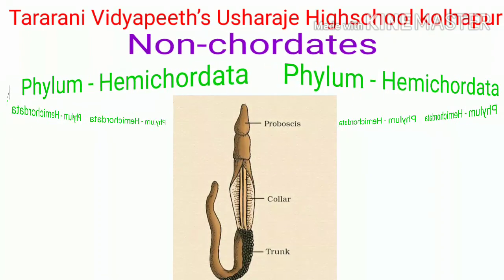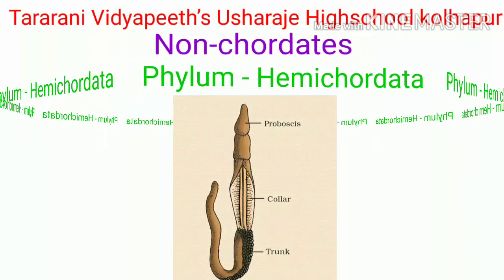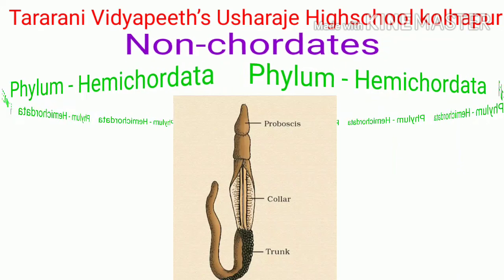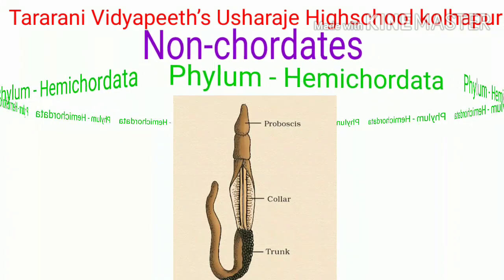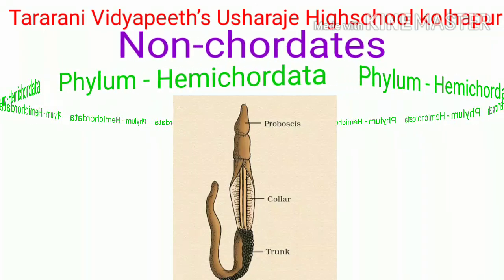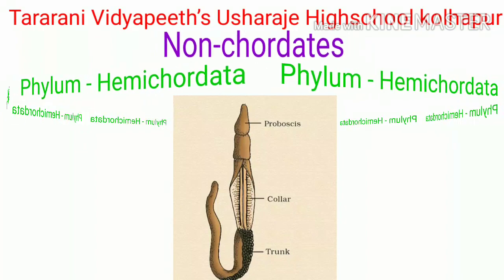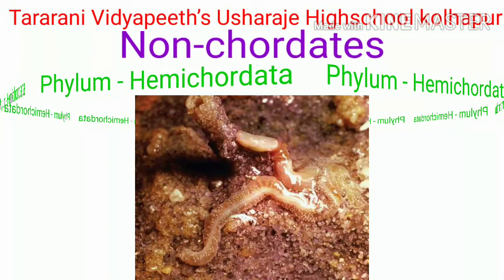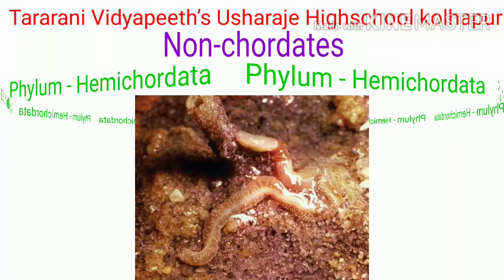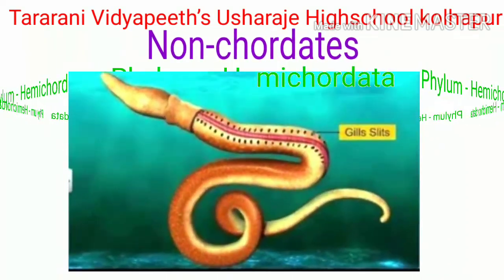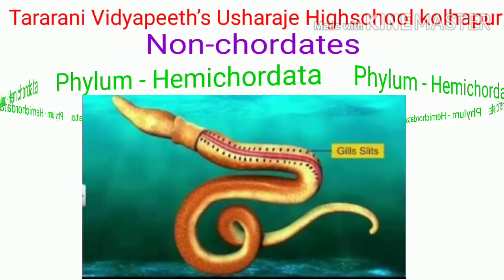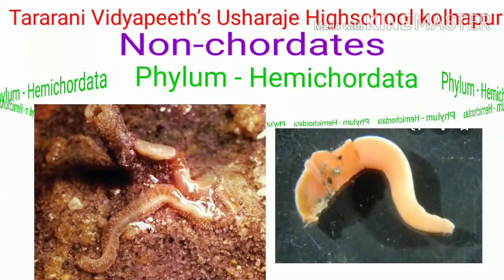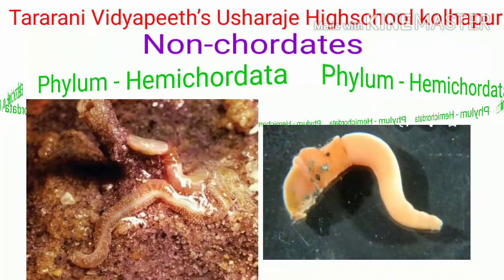Phylum Hemichordata: the body is divided into three parts — proboscis, collar, and trunk. Notochord is present in the proboscis region only, hence they are called hemichordates. These animals are also called acorn worms. They are marine animals that live in burrows in sand. They have one to many pharyngeal gill slits. They are unisexual or some may be hermaphrodite. Examples of phylum Hemichordata are Balanoglossus and Saccoglossus.